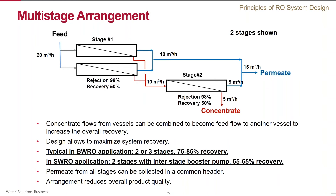Higher recovery reduces the amount of wastewater generated, but it also reduces the quality of the permeate. For example, if the feed salinity is 100 ppm, the permeate concentration after the first stage is 2 ppm with 98% rejection, and 4 ppm after the second stage, making the total product TDS about 2.67 ppm. There is always a trade-off between high recovery and high product quality in every reverse osmosis system.